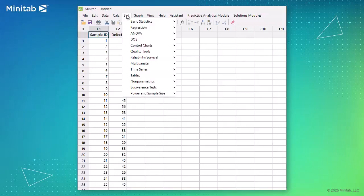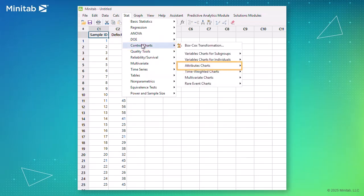To create a C-chart in Minitab's statistical software, choose Stat, Control Charts, Attributes Charts, C.